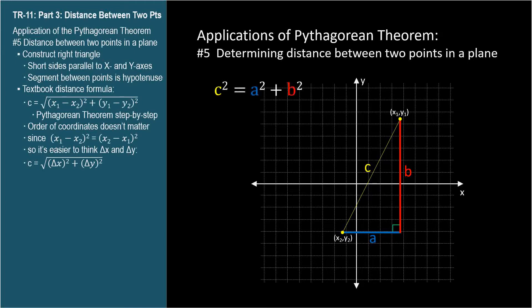c squared equals a squared plus b squared, so c equals the square root of the sum of squares. What values do we use for a and b? Look carefully: a is the difference between the x-coordinates, the horizontal distance between x sub 1 and x sub 2, so x sub 1 minus x sub 2.